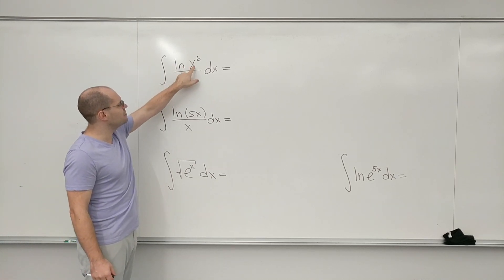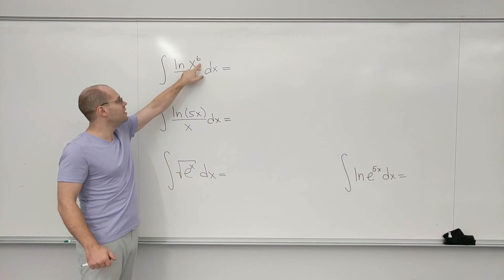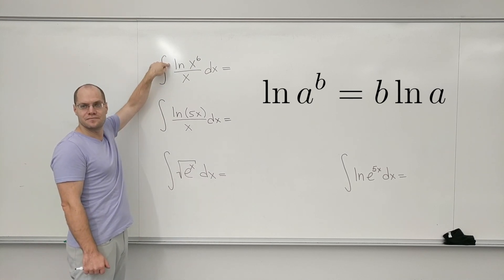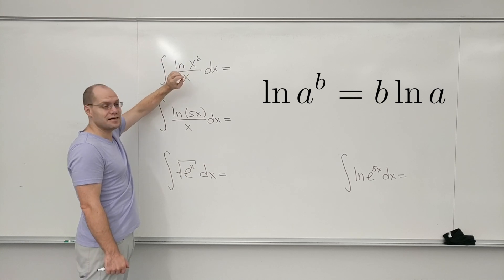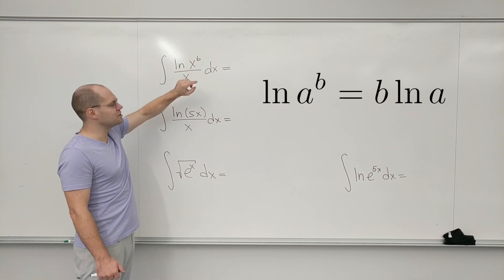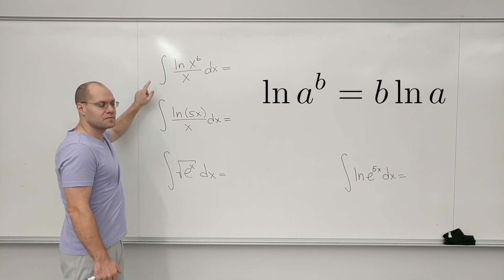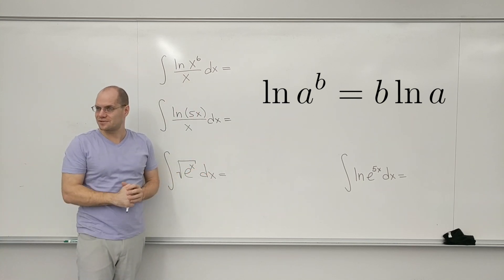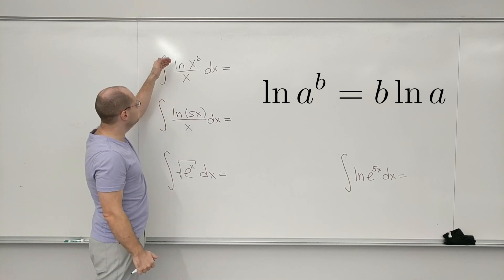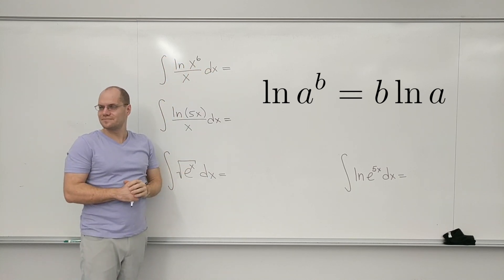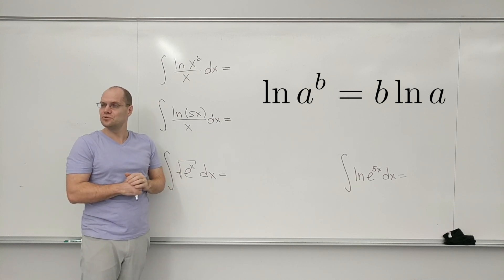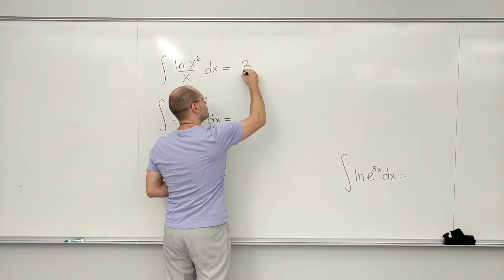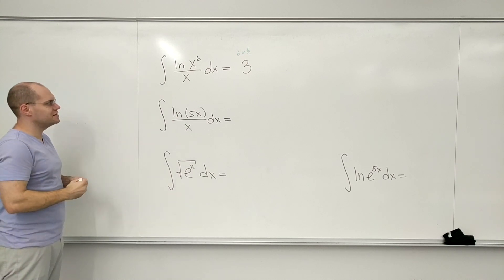So log of x to the sixth - the log has the property that whatever the power is, it can just come out outside of the log as a multiplicative power. So 6 comes out, and you have log of x divided by x. 1 over x is the derivative of log of x. So we basically have log times the derivative of log. We know what that is: u u prime, it's u squared over 2. So it's 6 times 1 half, which is 3, and then it's log squared of x.